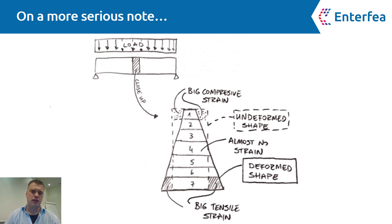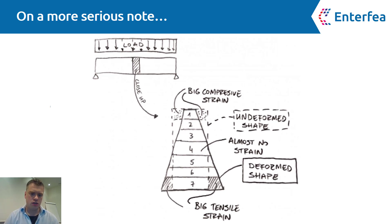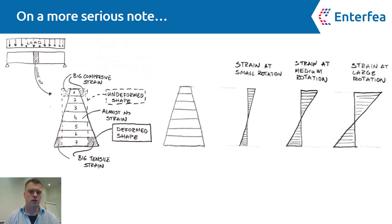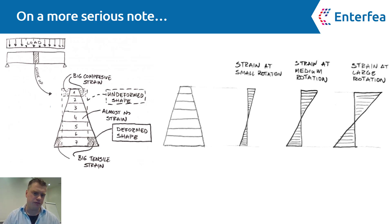I can overlay the original shape with the deformed shape. You can notice that on the top the shape compressed a lot, and on the bottom the shape extended a lot. This means that there is high strain at the top and at the bottom, while in the middle almost nothing happens. I can plot the strain depending on the rotation — the higher the rotation, the bigger the strain is in my cross-section. This is kind of obvious.